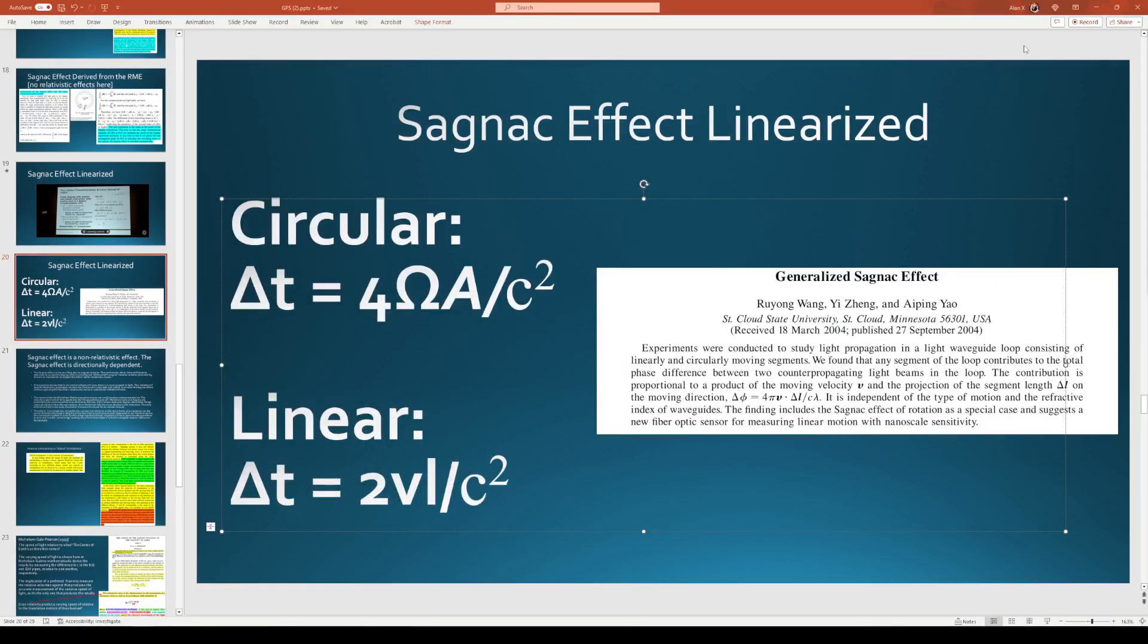So to backtrack a little bit to catch everyone up, we have the Sagnac effect linearized. Now, the old way that they describe the effects of the Sagnac effect is through mathematics, and they equate the effect due to angular rotation. So the equation that they use is delta T equals 4 omega A divided by C squared.